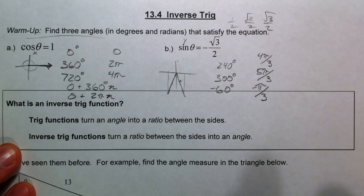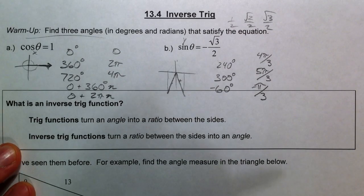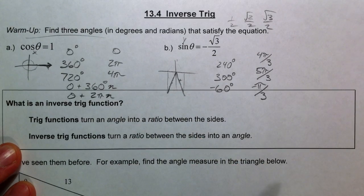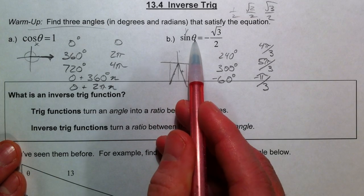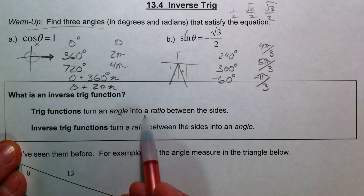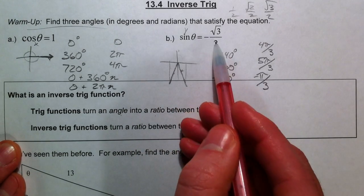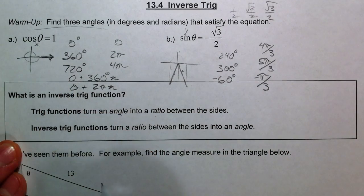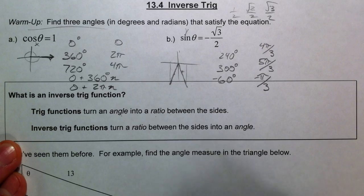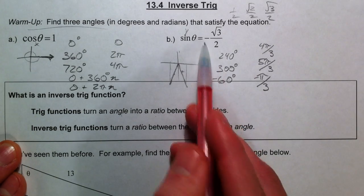So the trouble is that there are infinite answers for an equation like this. The original trig function - if you take the sine of some angle, it turns it into a ratio: negative root three over two, or a ratio of one. Inverse trig functions turn ratios back into the angle.